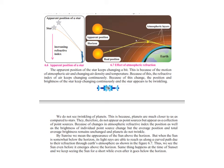The apparent position of the star keeps changing a bit. This is because of the motion of the atmospheric air and changing air densities and temperature. Because of this, the refractive index of the air keeps changing. Because of this particular change, the position and the brightness of the star keeps changing continuously, and the star appears to be twinkling. At the same time, it appears to be at a higher position than where it is normally.